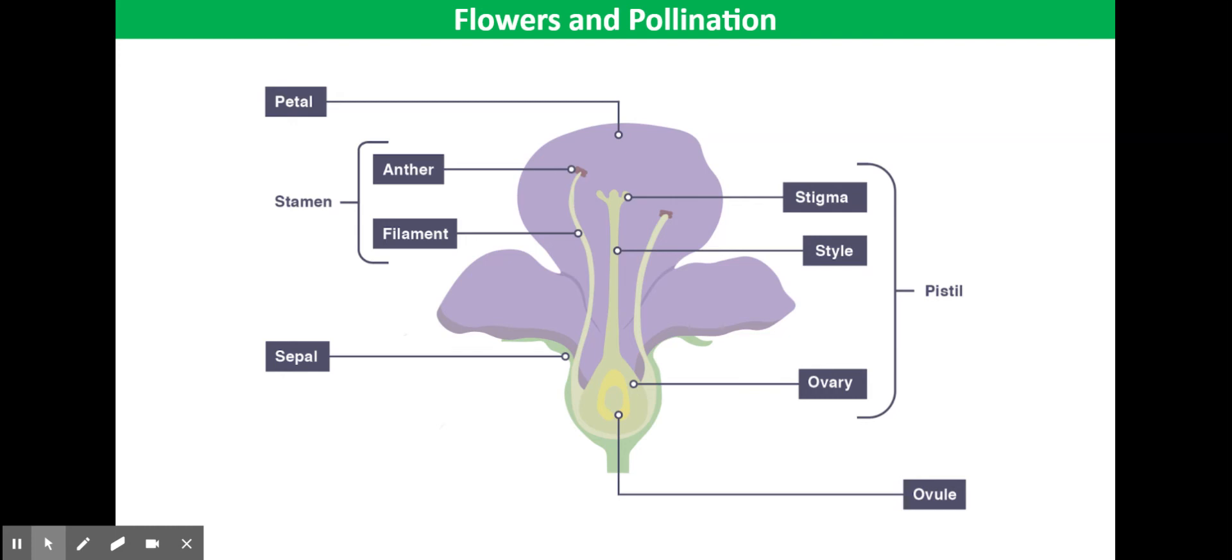In insect pollinated flowers, so those are flowers that distribute their pollen via insects, the petals are large and brightly colored to attract the insect pollinators. The nectar is scented also to attract insect pollinators.